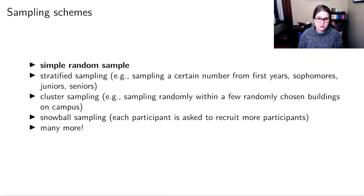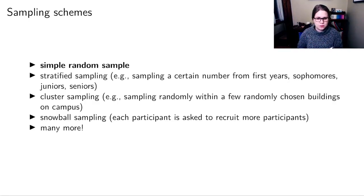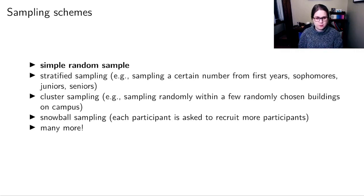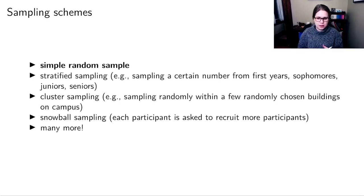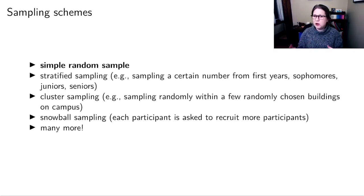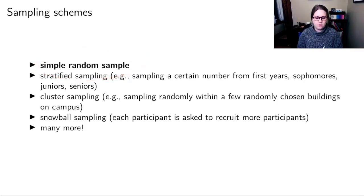There are other sampling schemes too. Stratified sampling is where you break people into similar groups and sample within those groups — like sampling a certain number of first-years, sophomores, juniors, and seniors. Cluster sampling involves picking groups expected to have a heterogeneous population, like sampling people within a few different buildings on campus. For rare diseases, there's snowball sampling, where you recruit someone and ask if they know anyone else with that condition. But simple random sampling is the one we'll focus on in this class.